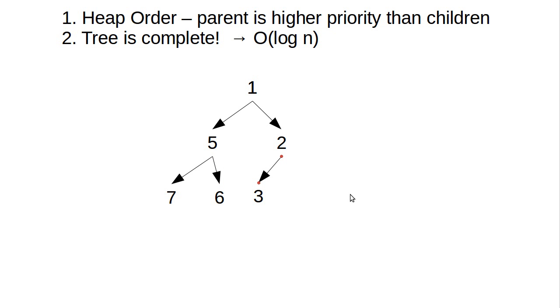This right here would be a valid heap, assuming that low values are high priority. And that's because it satisfies both of these rules. It has heap order, so given any node, its children are higher numbers, lower priority than it is. And I picked these numbers intentionally to point out that, for example, this three would be a higher priority than the five. That doesn't matter. The three is not directly descended from the five. It can be lower in the tree as long as everything that is a direct ancestor of it is actually a higher priority, which it is in this case.